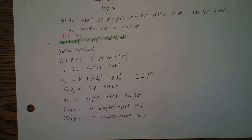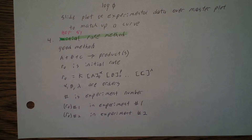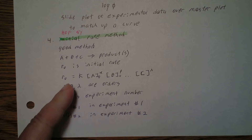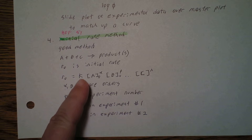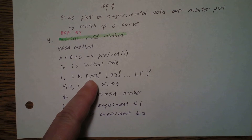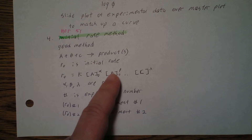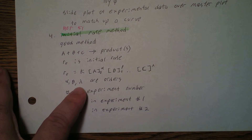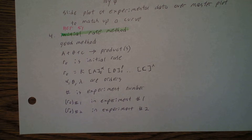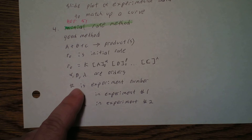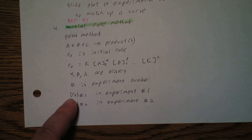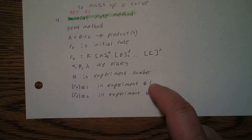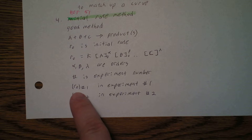A fourth method is called the initial rate method. This is a good method. Let's say we have A plus B plus C going to one or more products. R-naught is our initial rate, so the initial rate equals K times [A-naught]^alpha times [B-naught]^beta, and so on. Alpha, beta, and gamma are the orders of the reaction with respect to each reactant. We do the experiment more than once: rate sub-zero for experiment 1, rate sub-zero for experiment 2, and so on.